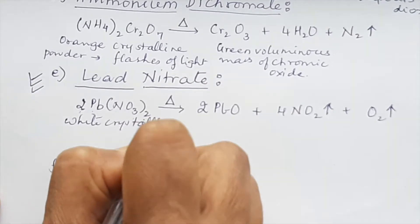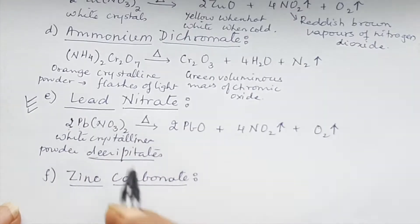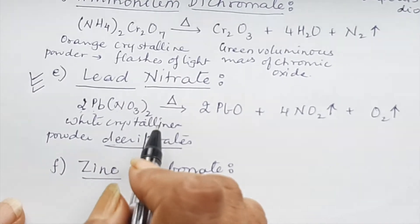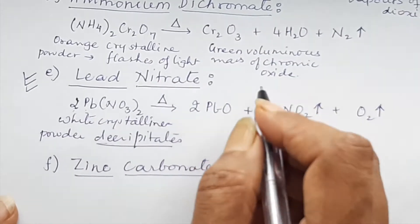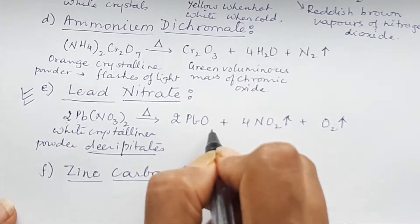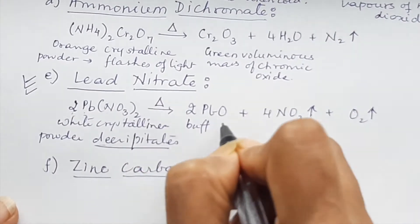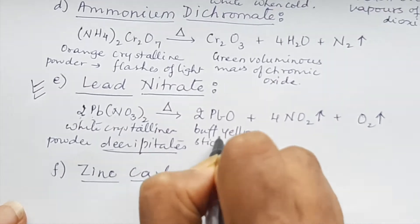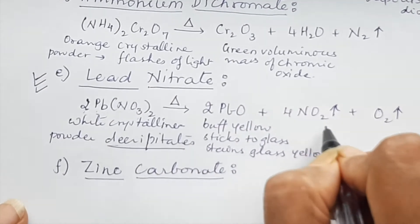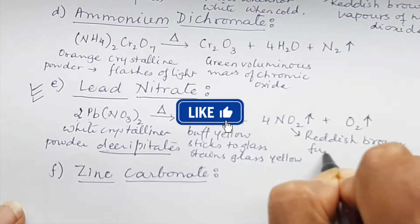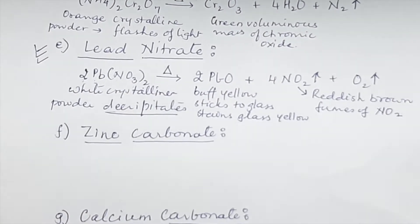Lead nitrate is white crystalline powder; it decrepitates (gives a crackling sound) on heating. The residue 2PbO, also called litharge, sticks to the glass and is buff yellow in color — so we say the residue is buff yellow and stains the glass yellow, which is difficult to remove. Reddish brown fumes of nitrogen dioxide are seen, and colorless oxygen gas is also produced.